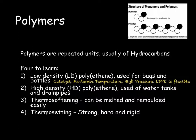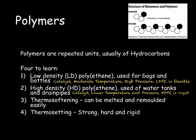High-density polyethene, however, is made at a much lower temperature and pressure and with a different catalyst. High-density polyethene, or HDPE, is rigid. As such, it can be used for water tanks and drain pipes.